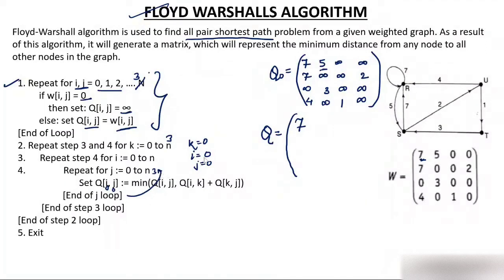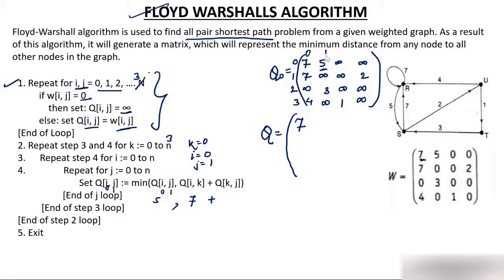I will increment the inner loop, so j becomes 1. Now I need Q[0][1]. Q[0][1] is 5, so I put 5 here. Then Q[i][k] + Q[k][j] = Q[0][0] + Q[0][1] = 7 + 5 = 12. Which is minimum — 5 or 12? 5. So I will put 5. Next, j increments to 2. Q[0][2] is infinity. Q[0][0] + Q[0][2] = 7 + infinity = infinity. Minimum is infinity, so I put infinity.